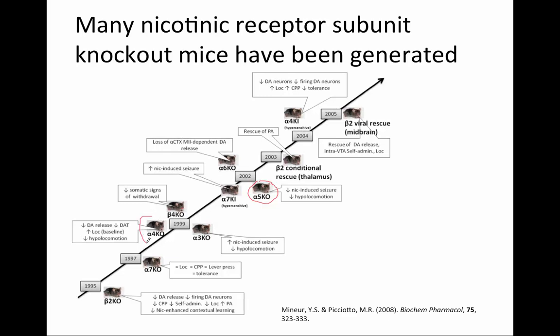The alpha-4 knockout has reduced dopamine release compared to control mice. Some of the mice do not have any changes in behavior, such as the alpha-7 knockout. This mouse does not have any differences in locomotor activity, nicotine conditioned place preference, or the development of nicotine tolerance, suggesting that the alpha-7 subunit does not play a role in these behaviors.